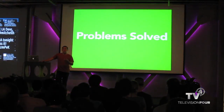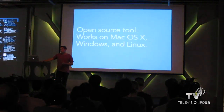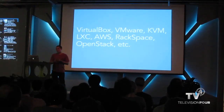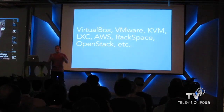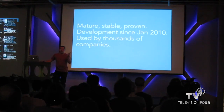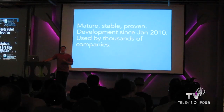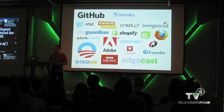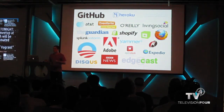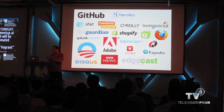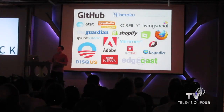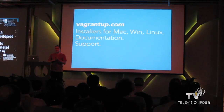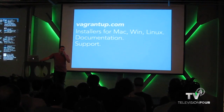Vagrant is an open source tool that works equally well on Mac, Windows, and Linux. It supports VirtualBox, VMware, KVM, and LXC. It's mature — been around since 2010, used in production for years by a ton of companies. Companies actively using Vagrant include Mozilla, Expedia, Edgecast, Tumblr, so technically Yahoo is using it now. You can get started at vagrantup.com, which has all the documentation and support.